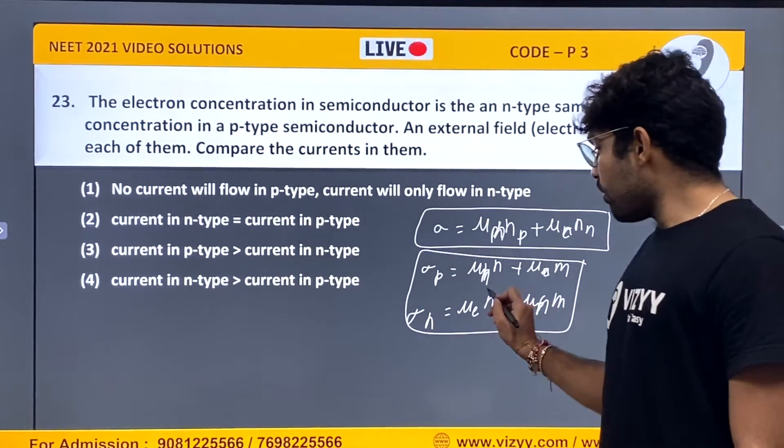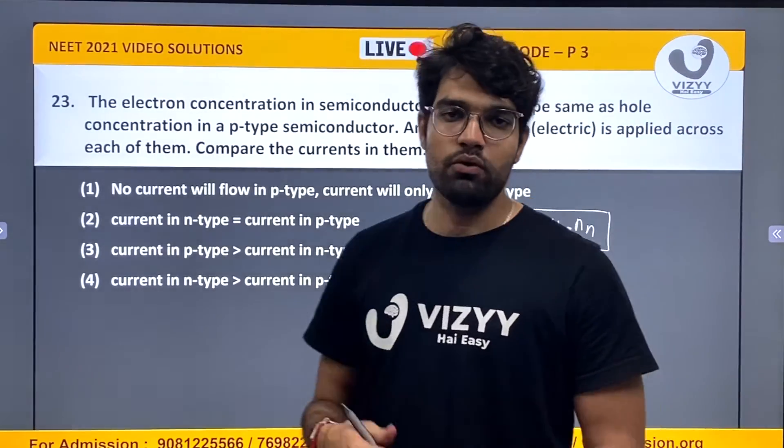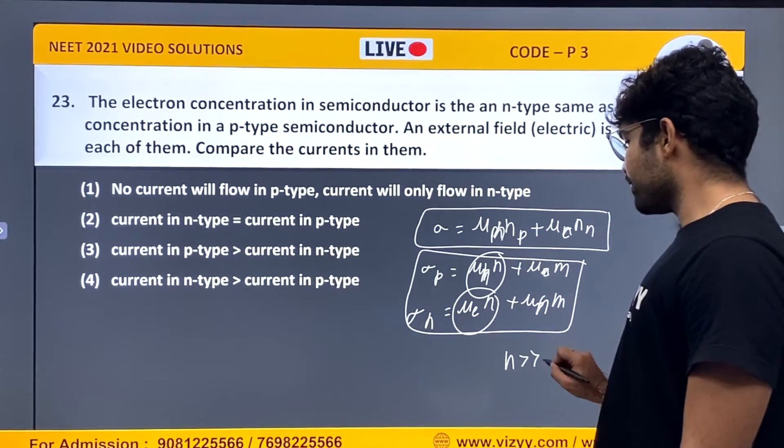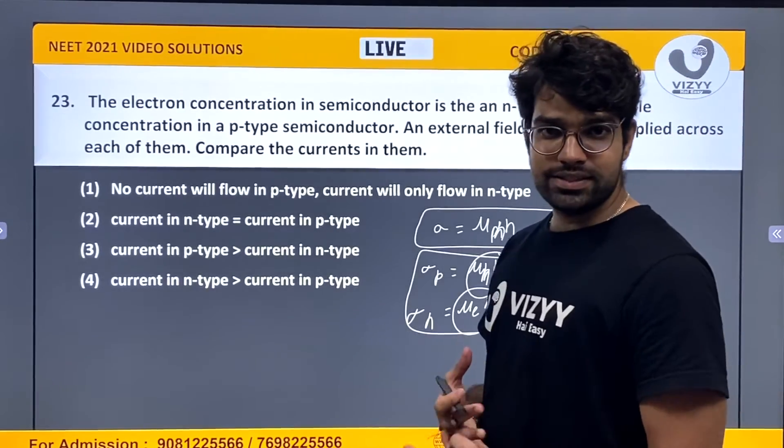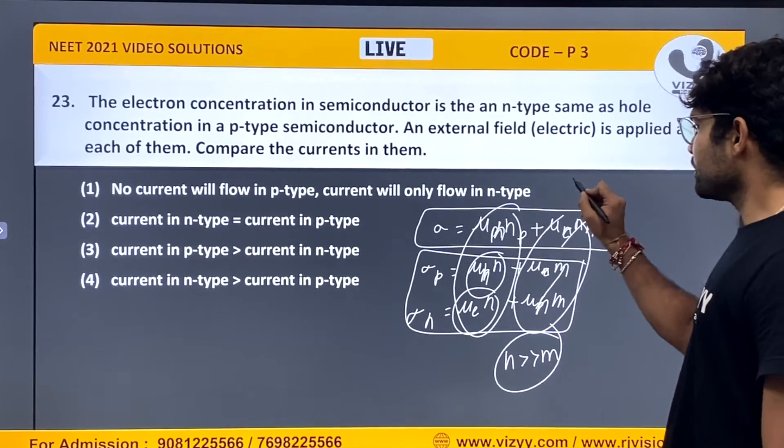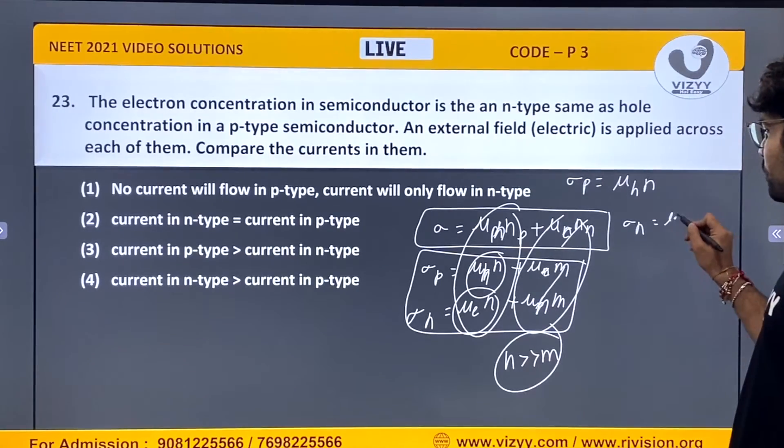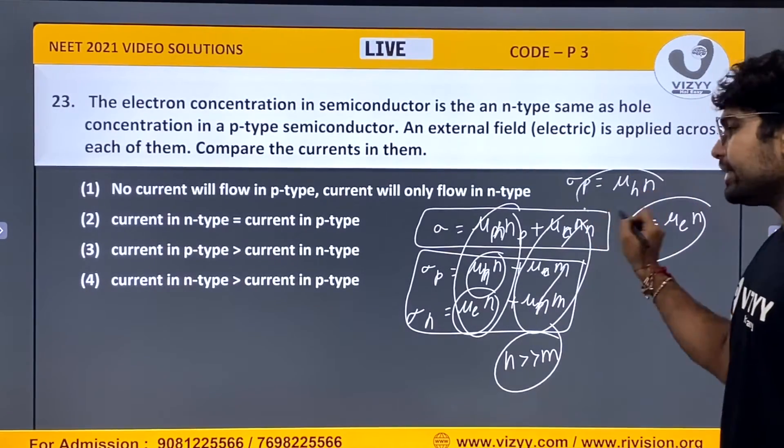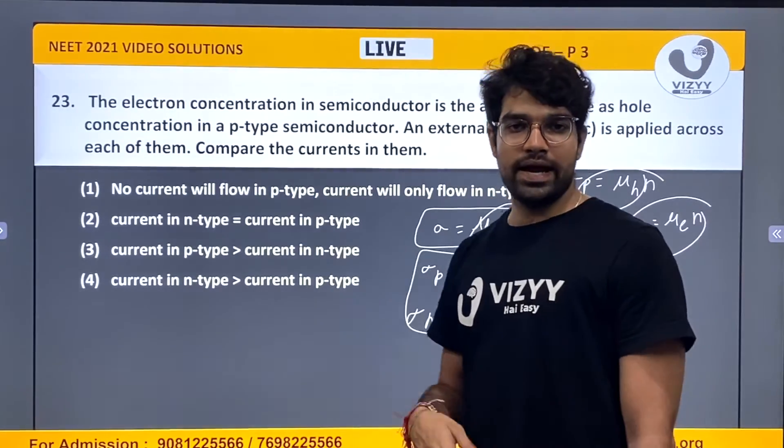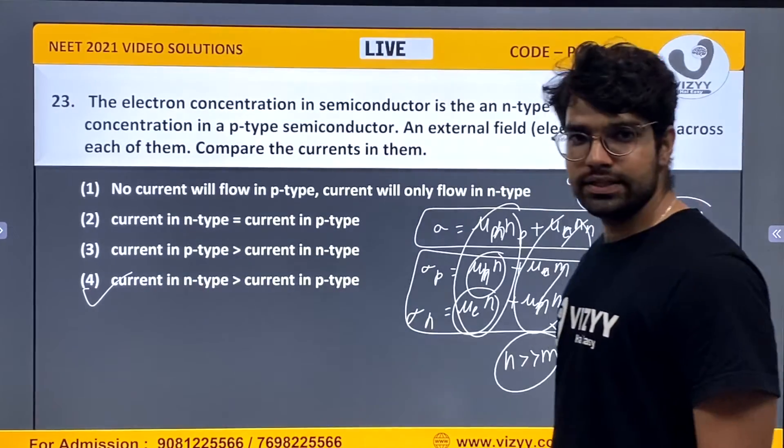The point is the mobility of electron is more than the mobility of holes. Which means sigma_N is more, but the majority carriers are more than the minority carriers. So after the terms, P type has mu_H into N and N type has mu_E into N. So mobility of electrons is more compared to holes, so the current will be more in n-type than current in p-type.